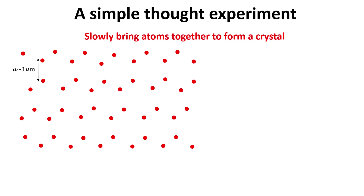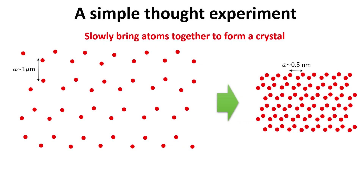We begin with a simple thought experiment. Imagine we start with a crystal composed of periodically distributed atoms separated by enormous distances, as shown in the figure. Here, the atoms are so far away from each other that they can be treated as independent. Now, we slowly and uniformly decrease the distances between all atoms to the typical atomic spacing in real crystals found in nature. The idea of this thought experiment is to help us understand how the electronic state of a crystalline solid can be built up from the electronic states of the constituent atoms.